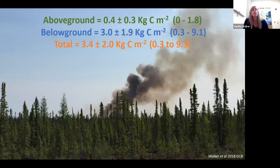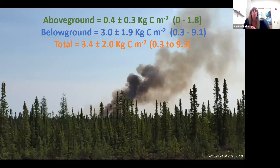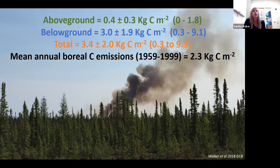In total, about 3.4 kilograms of carbon per meter squared was emitted, and you can immediately see that the above-ground component of this carbon combustion estimate is really small compared to the below-ground component — almost 90% of carbon combustion came from the organic soil. These carbon emissions are quite large compared to mean annual carbon emissions in the same region over a longer time period, indicating that these fires were in fact very severe. The range of carbon combustion estimates was quite large, from 0.3 to 9.3 kg C/m².